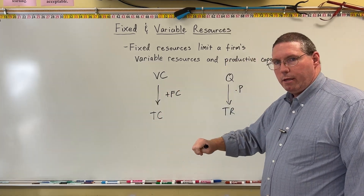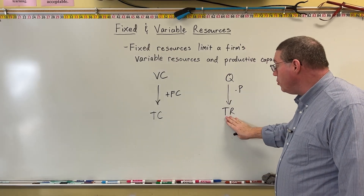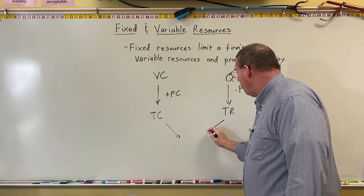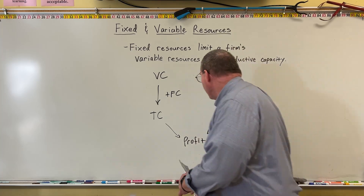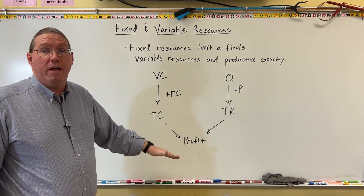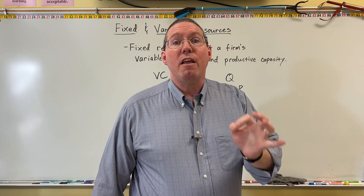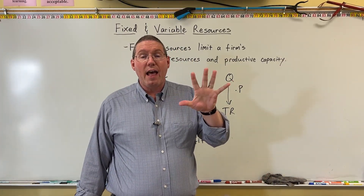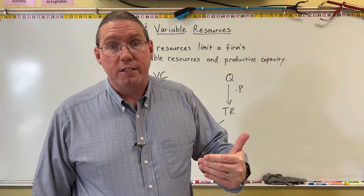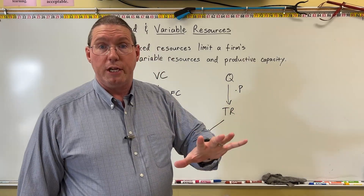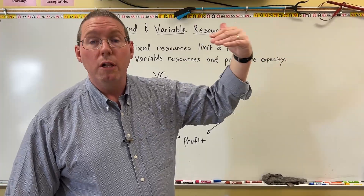Total cost has a cap based on fixed resources. Total revenue has a cap — a highest point — based on fixed resources. And since total revenue and total cost determine profit, we can confidently say that the fixed resources a firm has also limit their profit. UGI Corp has five Miggy 630 Deluxes — because of that limitation, they can only earn so much profit. If they double their production by getting five more machines, that increases their potential profitability.